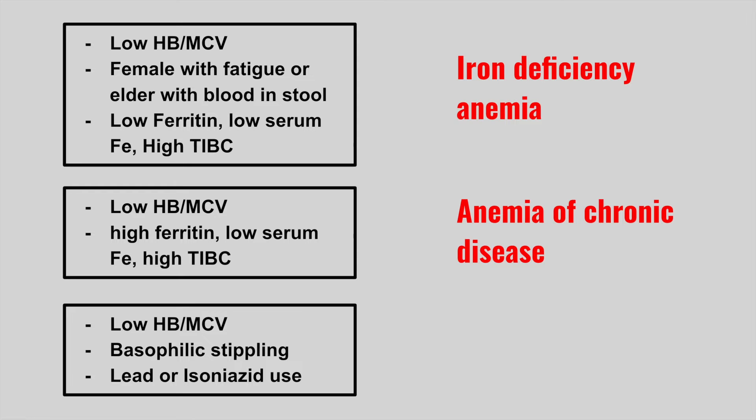The next patient is going to have a low hemoglobin, low MCV, with basophilic stippling and a history of lead or isoniazid use. This is sideroblastic anemia. Remember, basophilic stippling looks like a bunch of little dots all over the red blood cell.